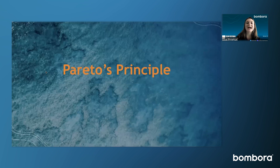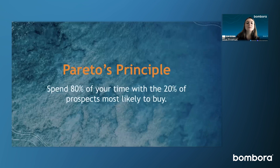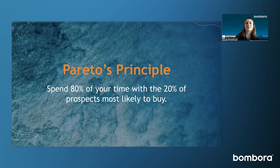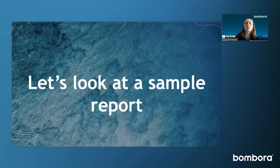Now we get to the fun stuff — actually using this data in action. This data is going to help you live by Pareto's principle: spend 80% of your time with the 20% of prospects most likely to buy. We can't go after 200 accounts a day, and inboxes are more crowded than ever. Intent data helps you narrow down to just the companies showing buying intent, as opposed to the entire B2B web, so you're able to really take the time to personalize. Our data can help you with that content too. Let's take a look at a sample report — you're going to see this in an Excel file.